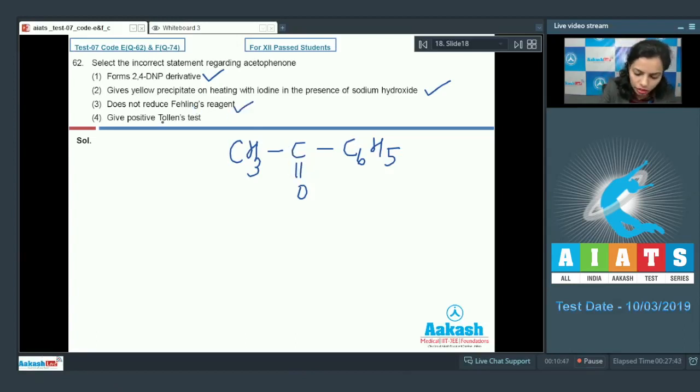Third one is also correct but the fourth one is incorrect that states it gives positive Tollen's test. That's why the only one incorrect statement is here that is given in option 4.